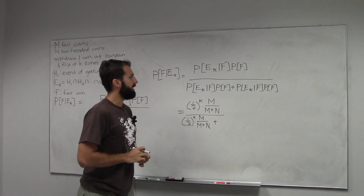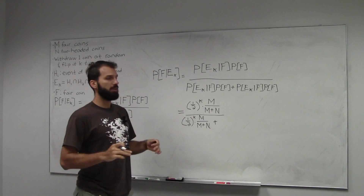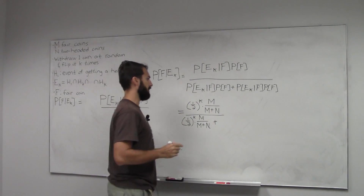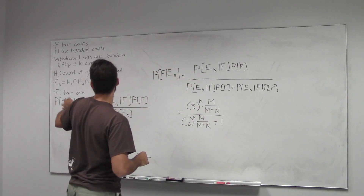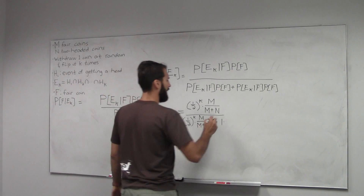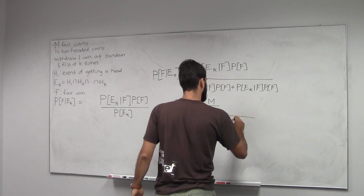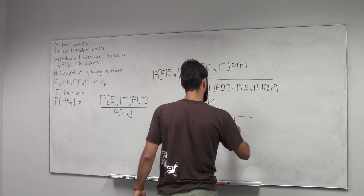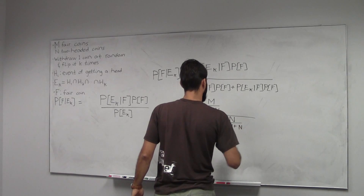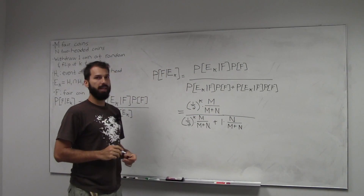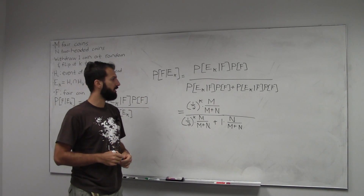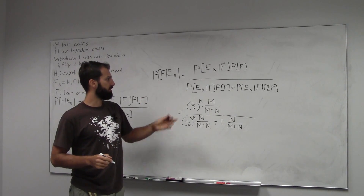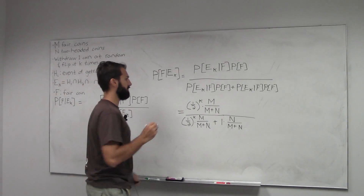The denominator has two terms. The first term is identical to the numerator: the probability that you get k heads in a row given a fair coin, times the probability of choosing the fair coin. The second term is the probability that you get k heads in a row given a two-headed coin — which will be one, it happens every time — times the probability that you initially choose a two-headed coin, which is n over m plus n, since each outcome is equally likely. So now we have an expression for the probability of having a fair coin given k heads in a row, as a function of k flips, n two-headed coins, and m fair coins.